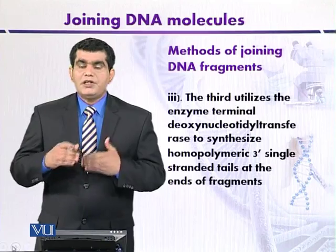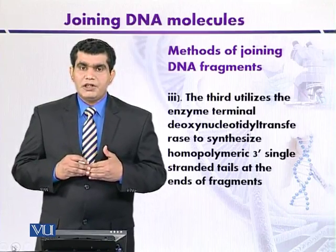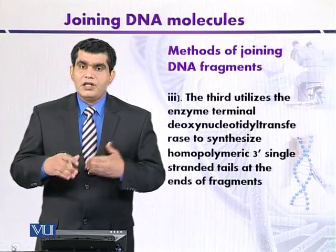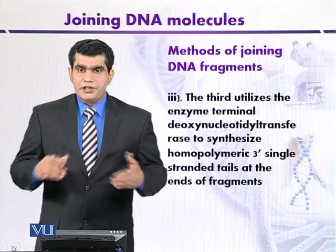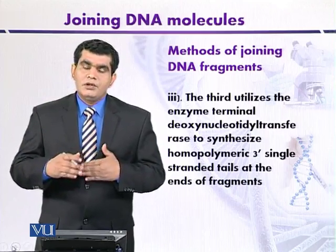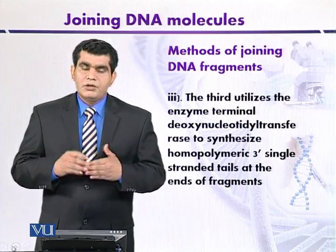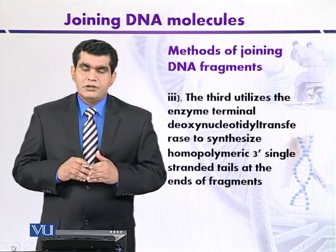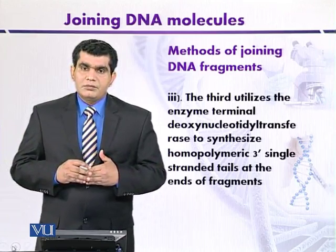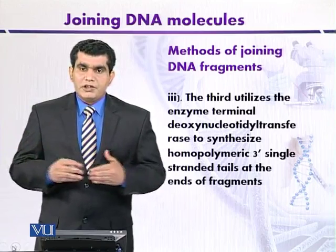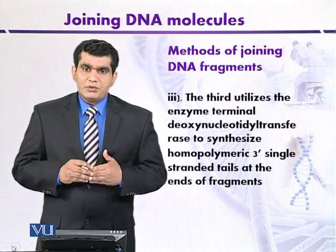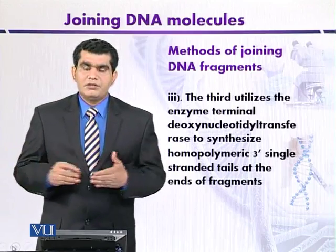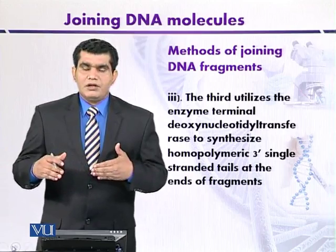The third method depends on the enzyme terminal deoxynucleotidyl transferase, commonly called terminal transferase. This enzyme introduces homopolymer tails at the 3' ends of DNA fragments. Homopolymer tailing means the tails contain a single type of nucleotide residue at the 3' ends — for example, either adenine, guanine, cytosine, or thymine.